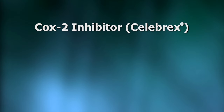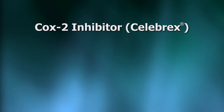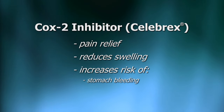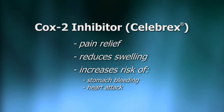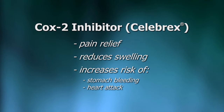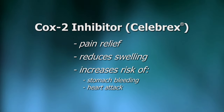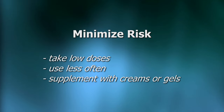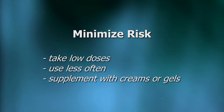Another prescription NSAID is called a COX-2 inhibitor — brand name Celebrex. Prescription NSAIDs, Celebrex, and prescription-strength ibuprofen are very effective at relieving pain and swelling. They may also have the same risk of stomach irritation as other NSAIDs, and in addition, they appear to slightly increase the risk of heart attacks. So they may not be suitable if you have other heart risk factors, such as smoking, high cholesterol, or high blood pressure. If you want to lower these risks, it's best to use naproxen, Aleve, or Tylenol, take low doses less often, and supplement with other pain relief like skin creams over your joints.